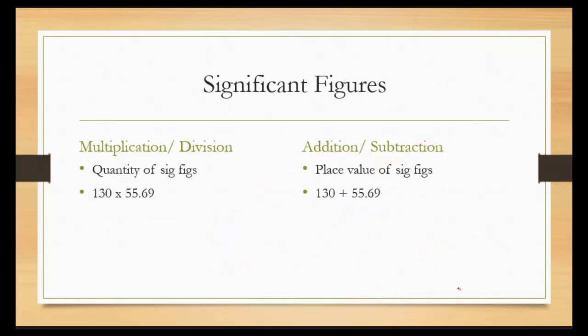Alright, so calculations with significant figures. With multiplication and division, you're going to look at the quantity of significant figures. So 130 times 55.69 comes out to be 7239.7. Because there's no decimal here, there's only two significant figures. And this one has no zeros, so that means all four of those are significant. You take the fewer. So we're going to take the two. So seven, two. These then become zeros. So 7200. That's how you round it off.